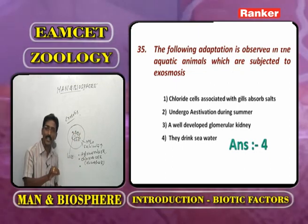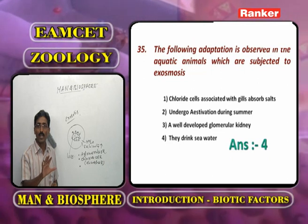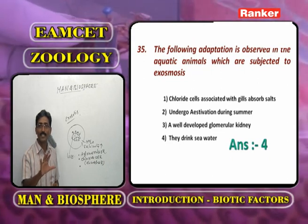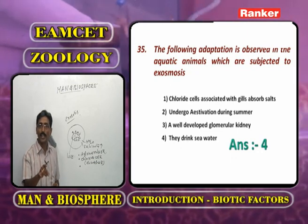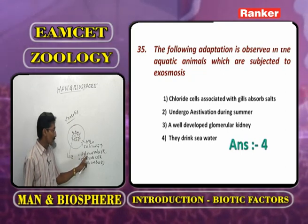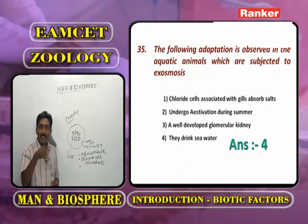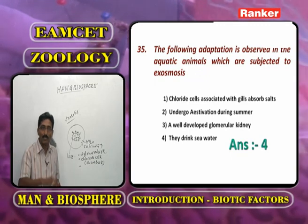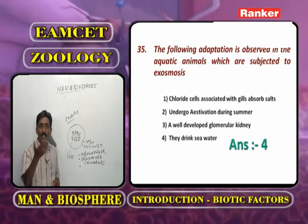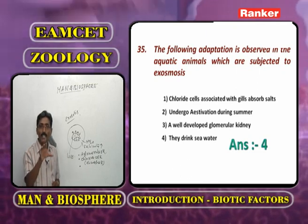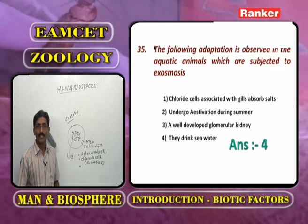Evaluating adaptations to exosmosis: chloride cells in these animals eliminate salts, not absorb them - so 'absorption of salts' is not correct. Marine animals do not undergo aestivation as marine water does not dry up. Aglomerular kidney is an adaptation, but the question asks about bony fish which have this feature - actually glomerular kidneys are not adapted here. The correct adaptation is that marine bony fishes drink more and more marine water to compensate for water lost by exosmosis.